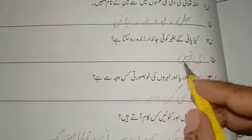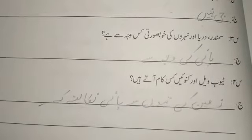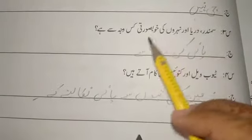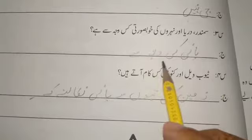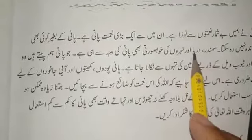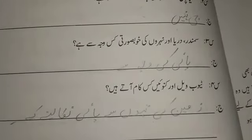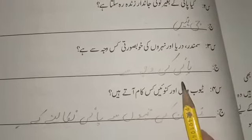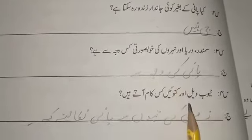سوال نمبر تین: سمندر، دریا اور نہروں کی خوبصورتی کس وجہ سے ہے؟ جواب: پانی کی وجہ سے۔ Passage میں پڑھا تھا کہ سمندر، دریا اور نہروں کی خوبصورتی بھی پانی کی وجہ سے ہے — یعنی اگر ان میں پانی نہ ہو تو وہ بالکل بنجر زمین ہوں اور ان کے اندر کی گندگی نظر آئے۔ پانی کی وجہ سے ان کی خوبصورتی ہے۔